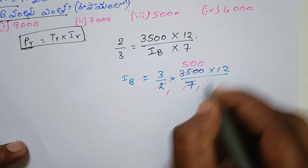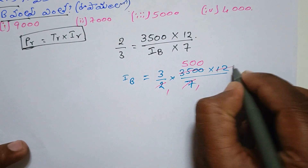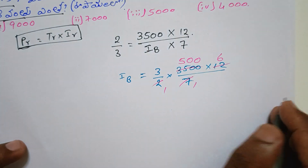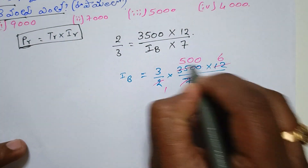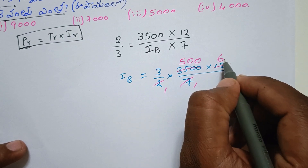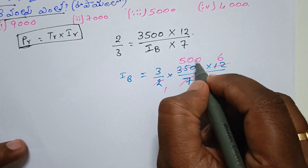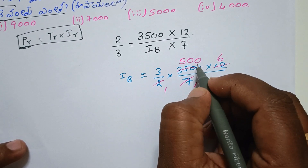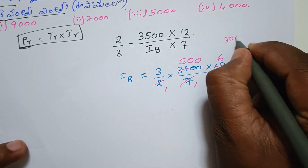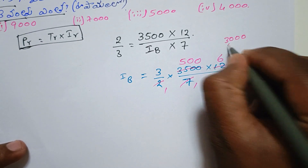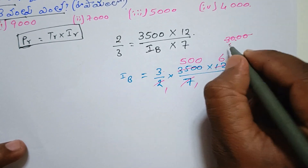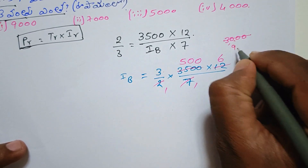2 are equal to 2 and then 3 are equal to 1. So cancel. 500 multiplied by 6 gives the result. Working through the arithmetic to find B's investment.